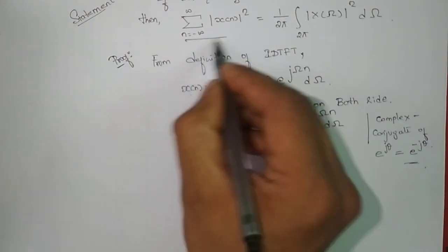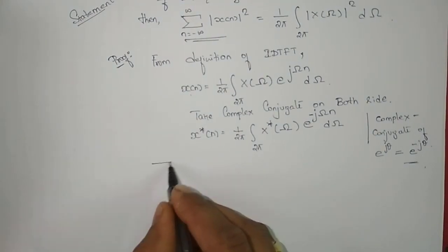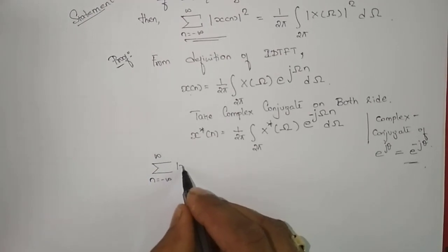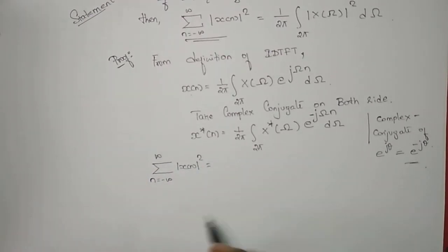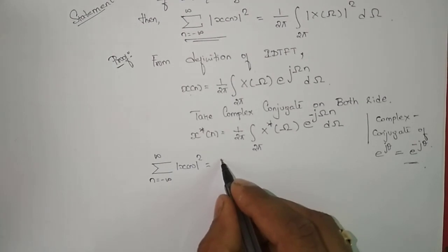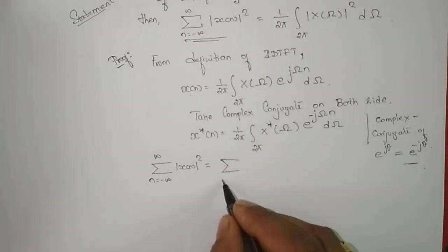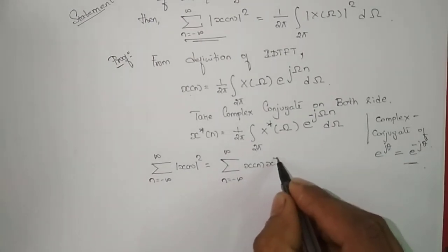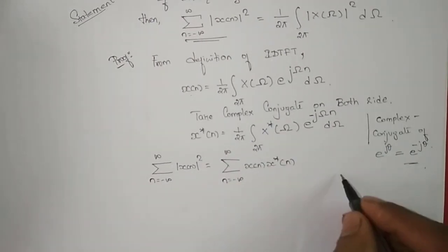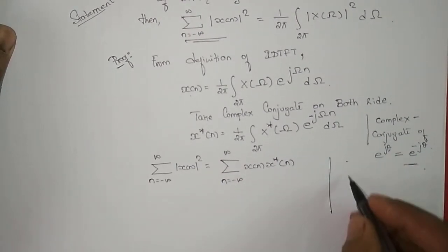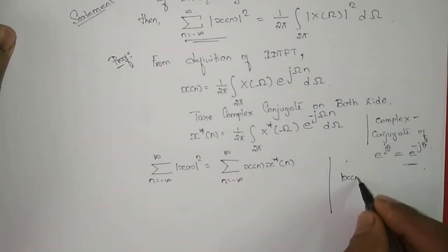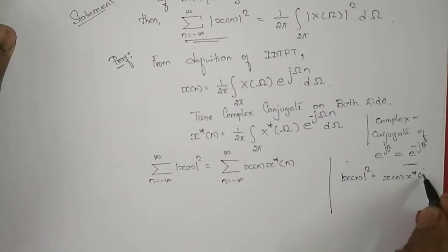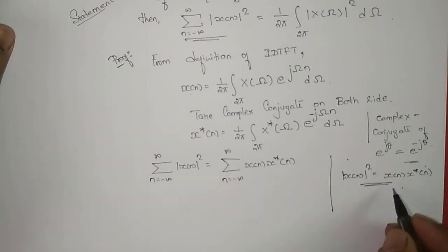Now we will take the statement: the summation from n equals minus infinity to infinity of the magnitude squared of x(n). I can write this as the summation from n equals minus infinity to infinity of x(n) times x*(n), since the magnitude squared of x(n) equals x(n) times x*(n).